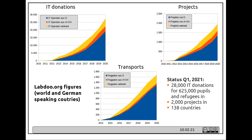Here you can see in blue the contribution from Germany, orange represents Austria and Switzerland, and yellow represents all other countries.